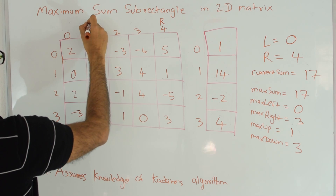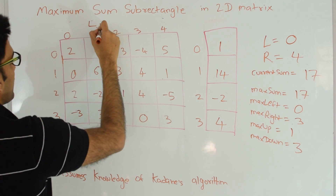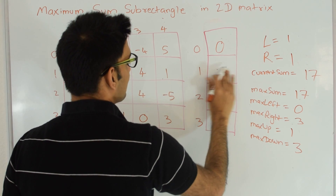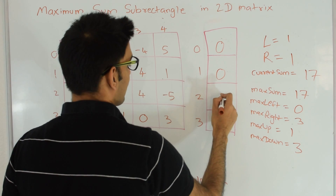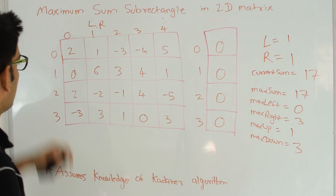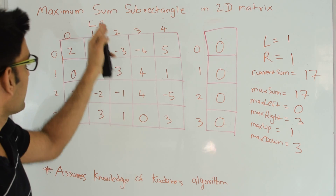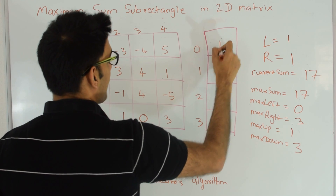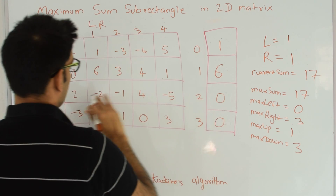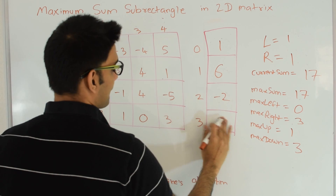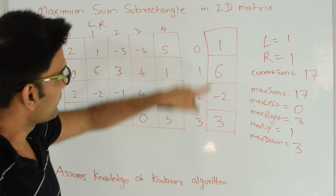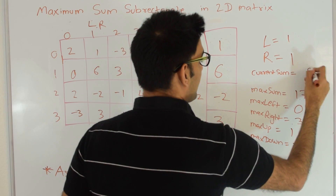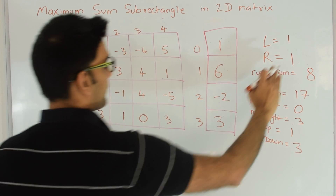We reset: left becomes 1, right becomes 1, and we reset the temp array to 0. Since this is the first time looking at this column, we copy column 1: 1, 6, -2, 3. The maximum sum using Kadane's is 6+1=7, 7-2=5, 5+3=8. Current sum becomes 8. 8 is not greater than 17 so we touch nothing. We increment right to 2.